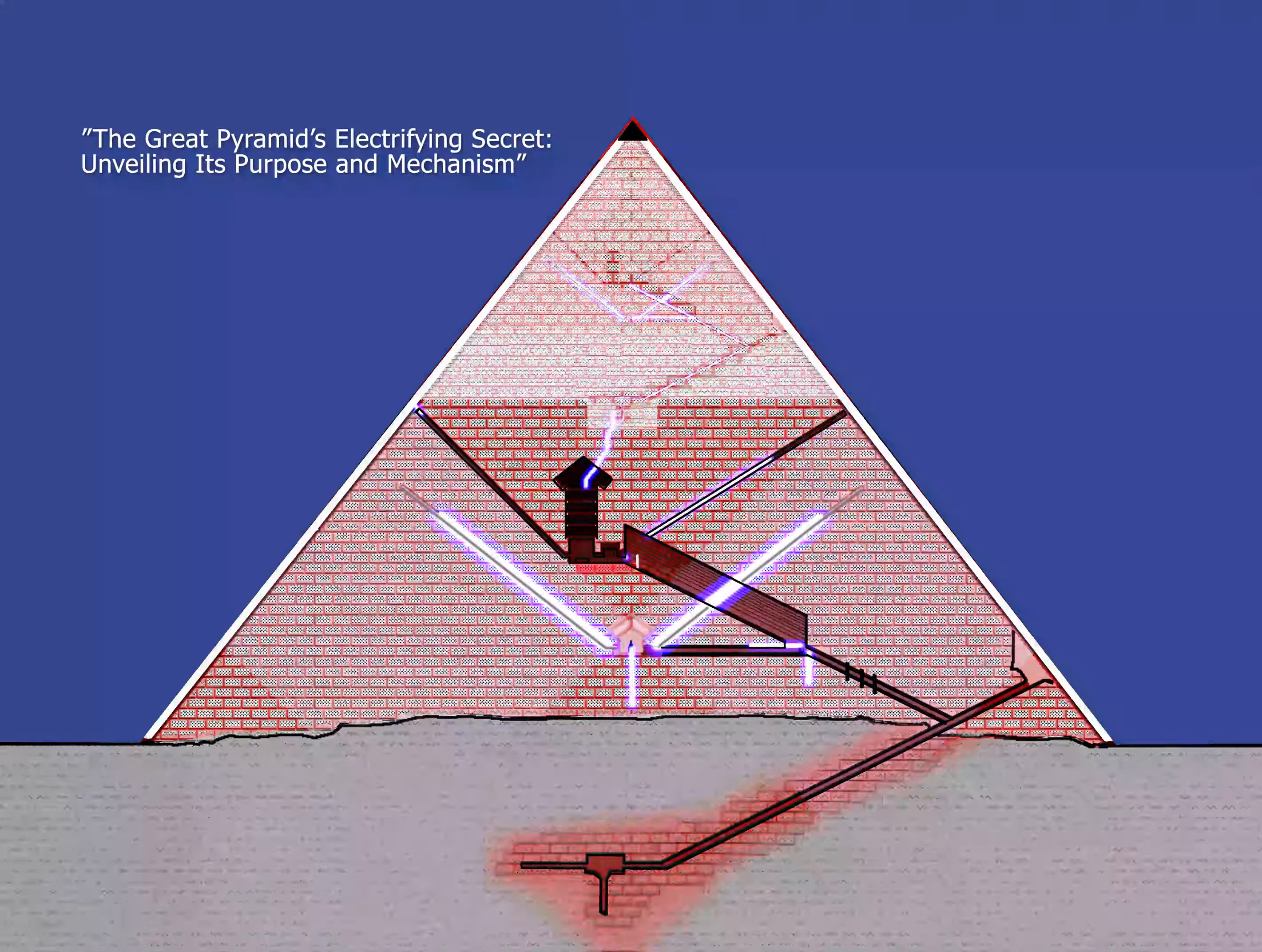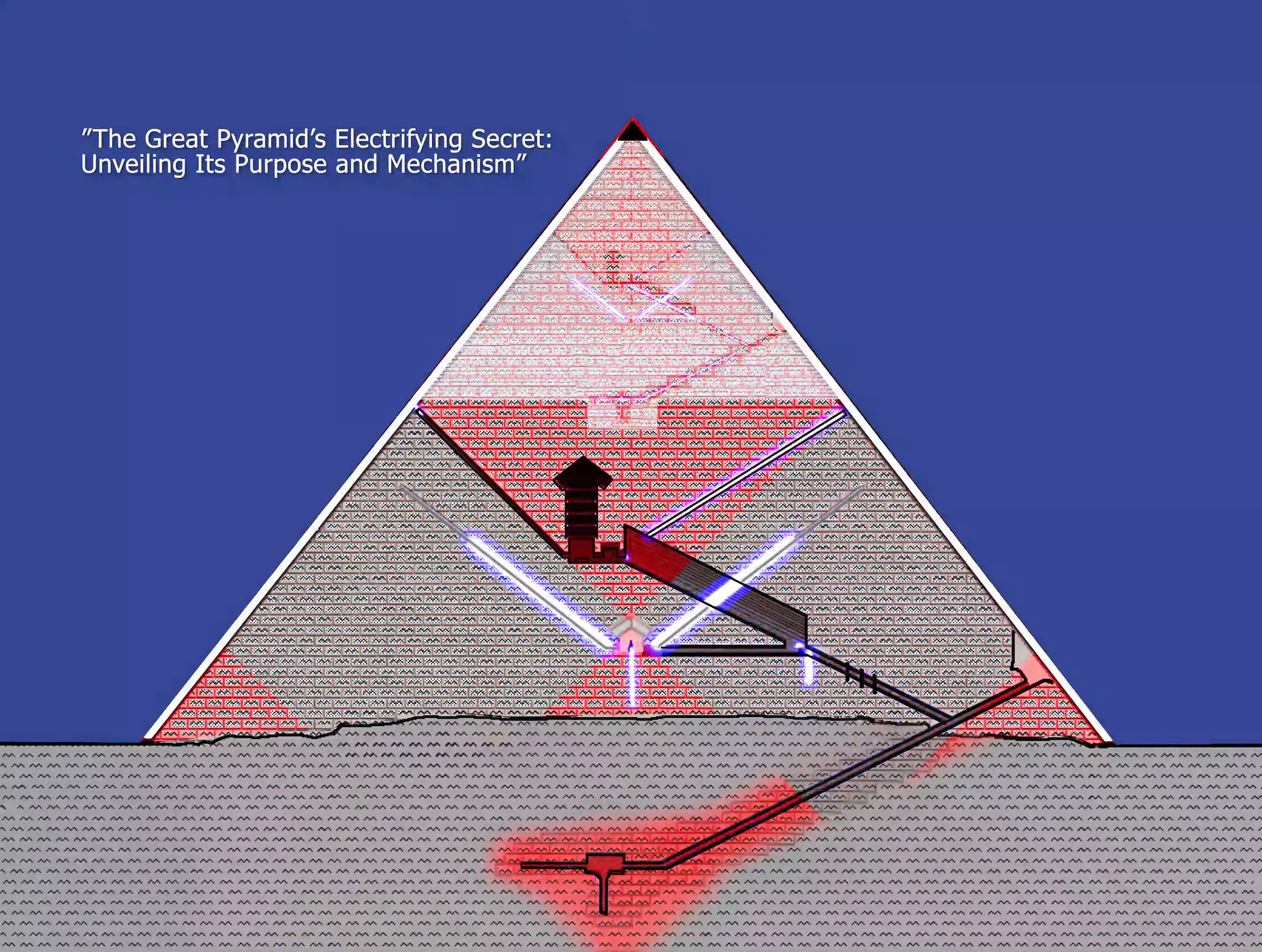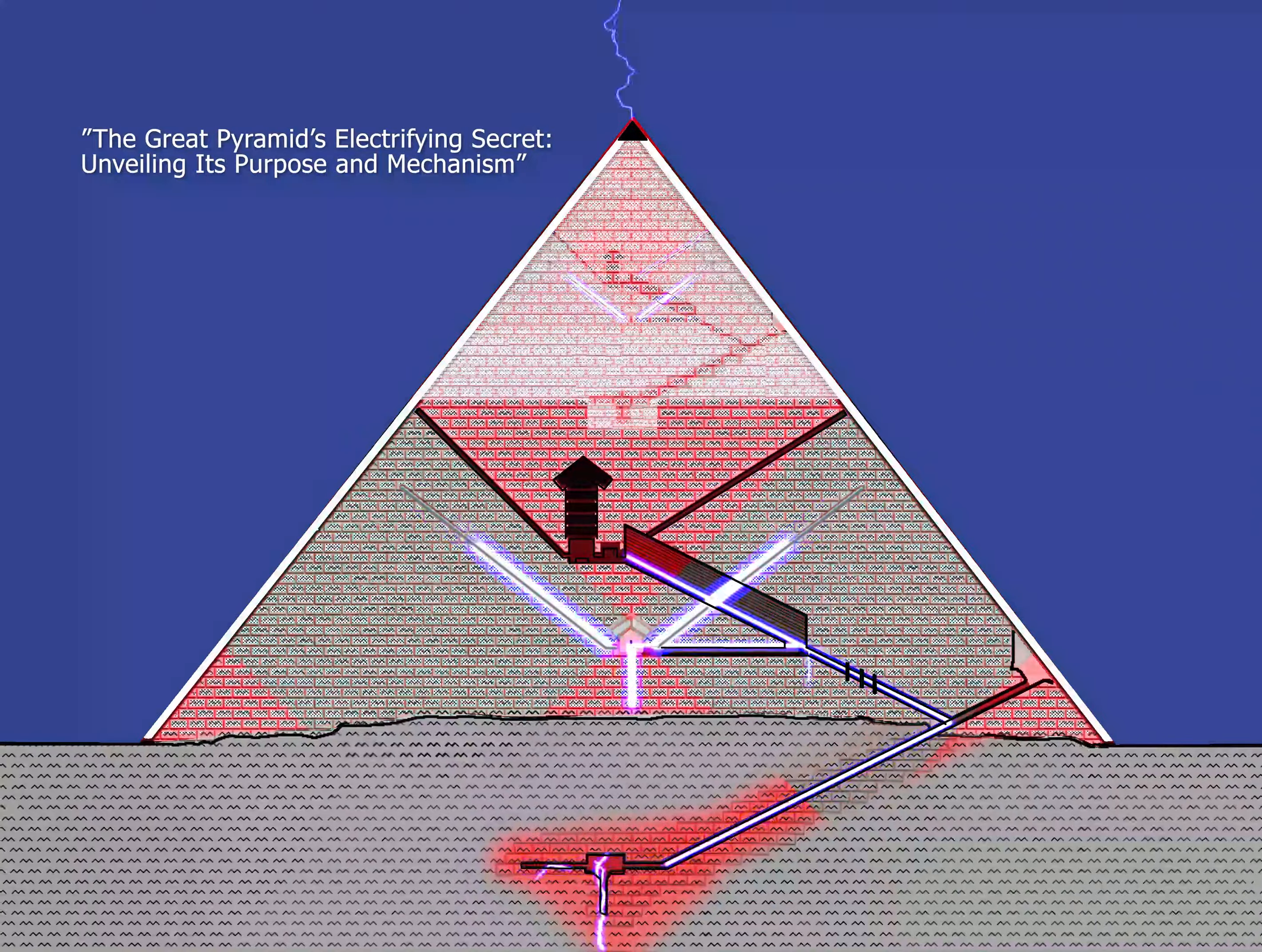Applying an electrical voltage to opposite walls of a block causes a change in its shape and size, known as the reverse piezoelectric effect.